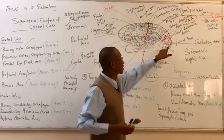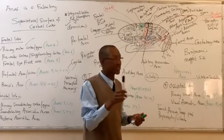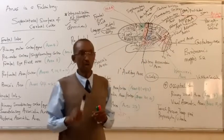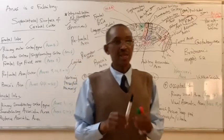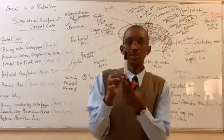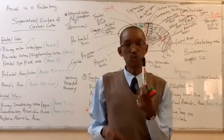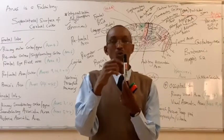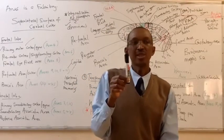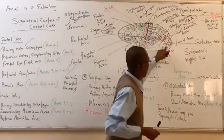After the occipital areas receive the image of any object that comes to your eyes, area number 18 will analyze the object. What do we mean by analysis? If I give you this marker, you have seen that it has a head that is black, a trunk that is white, and it has written 'whiteboard marker' on it. So you are able to analyze it — this is a marker. The analysis is the responsibility of area number 18.